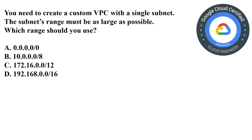Let's start with our first question. You need to create a custom VPC with a single subnet. The subnet's range must be as large as possible. Which range should you use? The options are: A) 0.0.0.0/0, B) 10.0.0.0/8, C) 172.16.0.0/12, and D) 192.168.0.0/16.